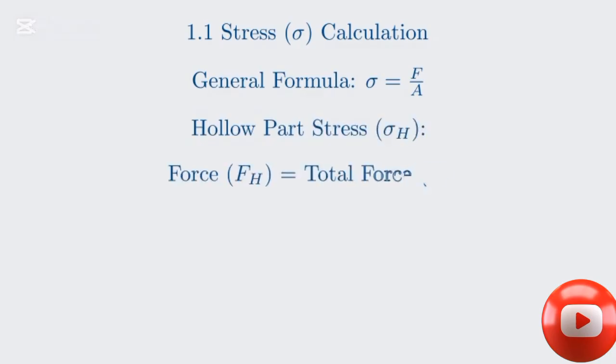The fundamental formula for stress, denoted by sigma, is force divided by area. That is, stress equals force F divided by cross-sectional area A. For the hollow part, the force applied is still the total force F. However, the area we must use is the area of the hollow section.